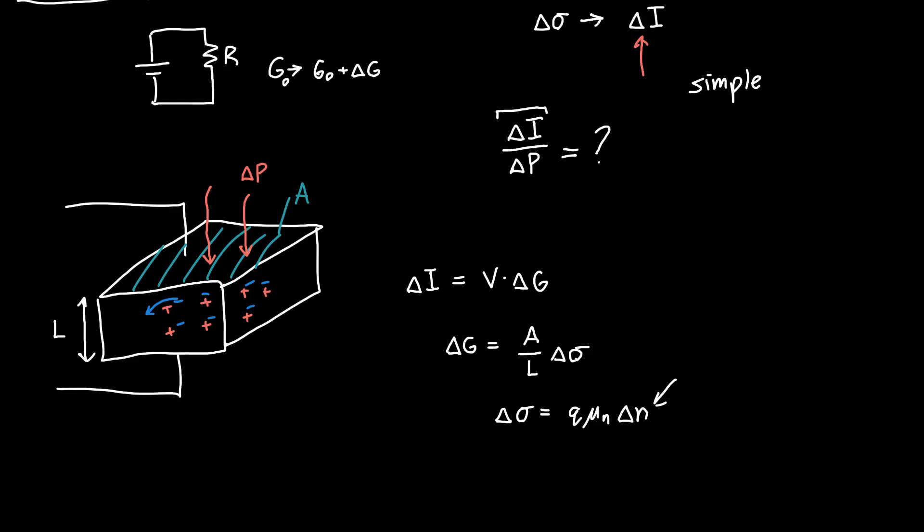If we stopped generating them, if we stopped continuously generating, stopped applying power, then we'd see that our additional electrons delta n would start to decay until they got back down to their equilibrium level.